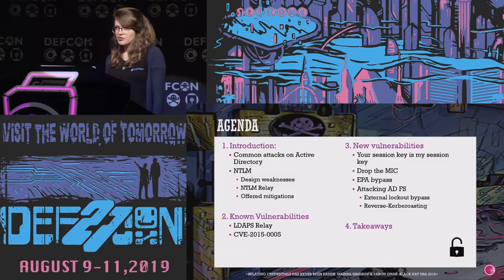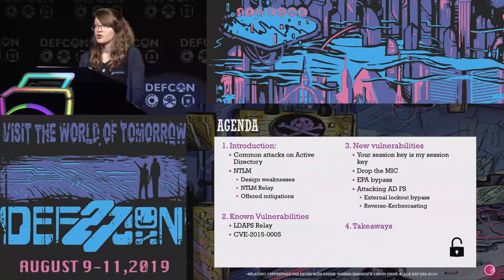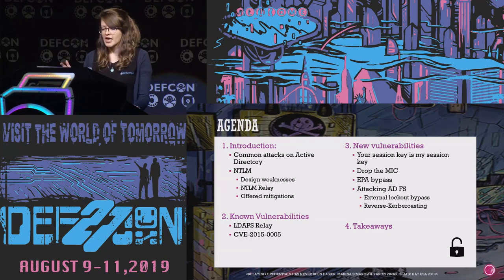We have a lot of ground to cover, so let's see the agenda for this talk. We'll begin with a short introduction to Active Directory, see some common attacks, and focus a lot on the NTLM protocol — its design weaknesses, the NTLM relay attack, and some of the offered mitigations. Then we'll cover known vulnerabilities, new vulnerabilities bypassing all mitigations, how NTLM can attack ADFS servers, and something new we call reverse Kerberoasting, finishing with takeaways.